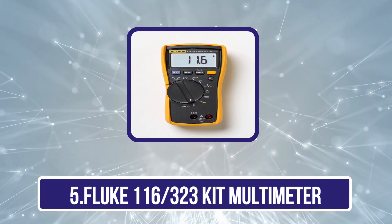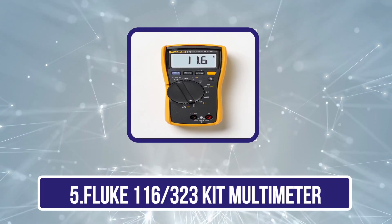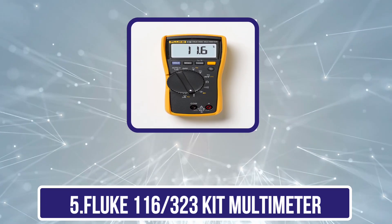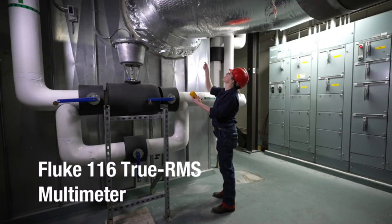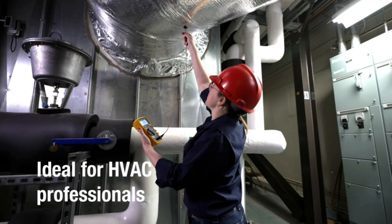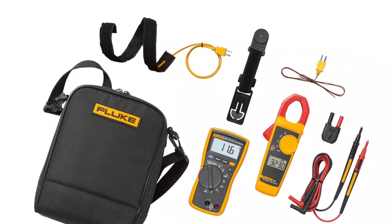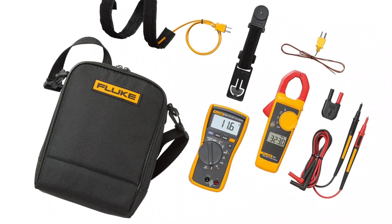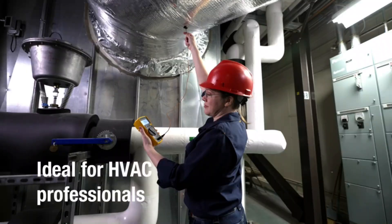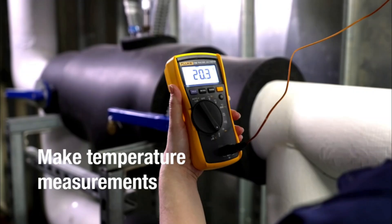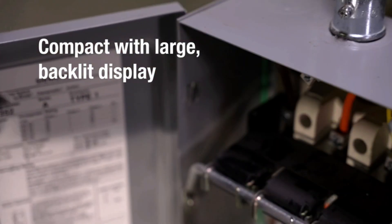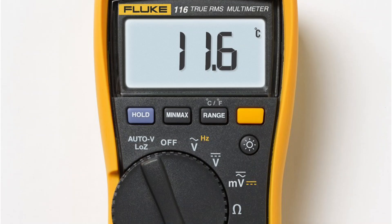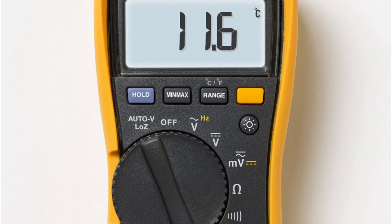And our last choice is Fluke 116 of 323-KIT Multimeter. The Fluke 116 of 323-KIT Multimeter is a top-tier product from a renowned brand known for reliability and precision in electrical testing. The Fluke 116 of 323-KIT Multimeter has a compact, ergonomic design with a large backlit LED display, making it easy to read measurements even in dimly lit environments.